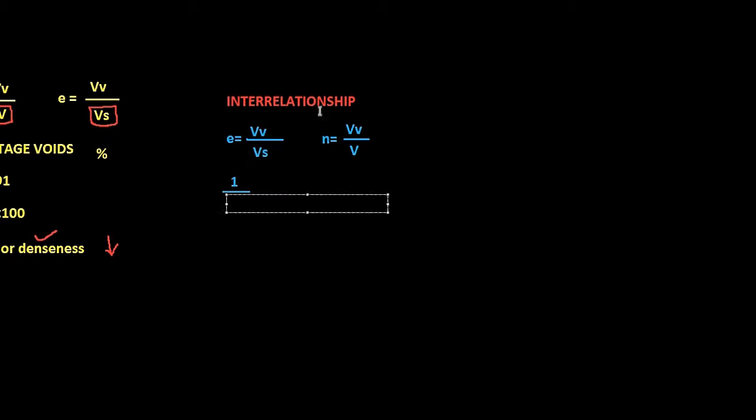Let us now reverse this equation and see what happens. 1 by N is equal to total volume by volume of voids. Now let's rewrite this total volume in terms of voids and solids: volume of voids plus volume of solids by volume of voids. Now let's split this equation apart.